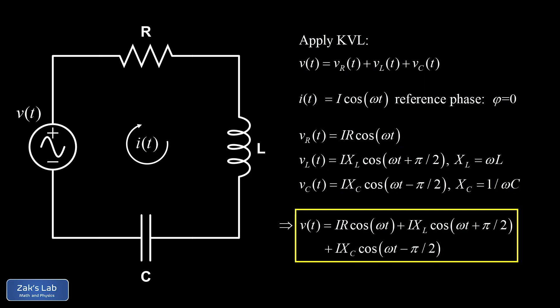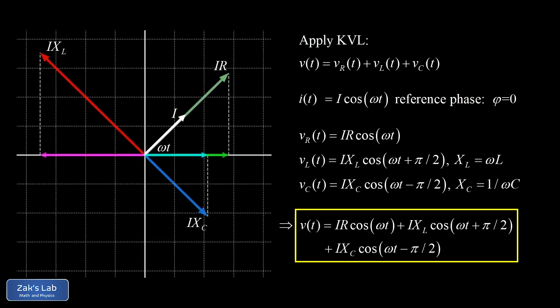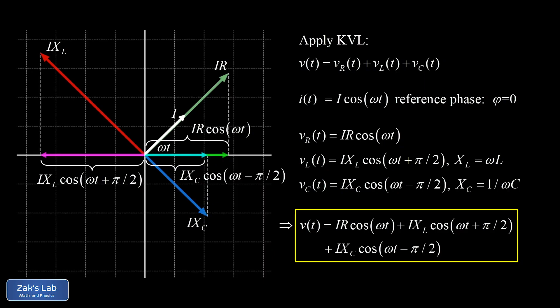To add cosine functions with the same frequency but different phase angles, we represent them as rotating vectors or phasors whose horizontal components correspond to the cosine functions we're adding. The phasor representation is a powerful geometric trick for adding sinusoidal functions with different phases. The vector sum is straightforward here because all our relative angles are π/2.